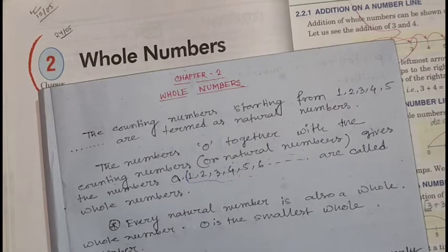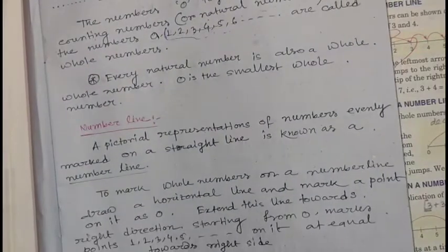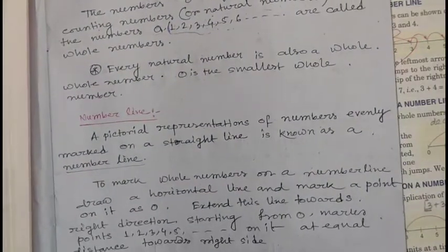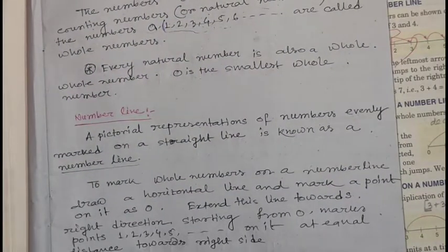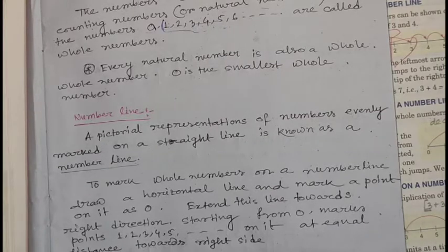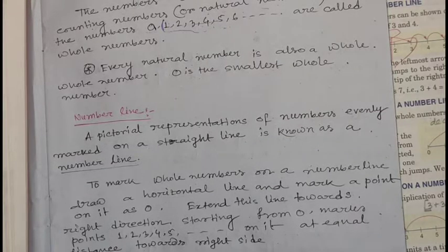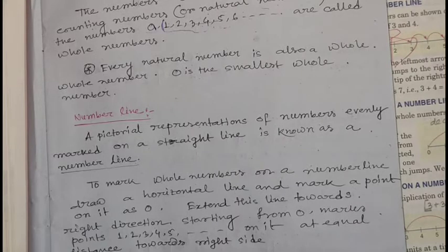Now we will learn about the number line. A pictorial representation of numbers evenly marked on a straight line is known as a number line.